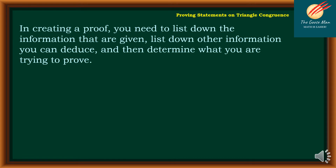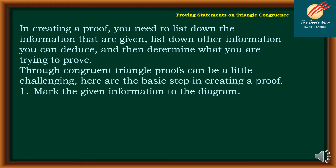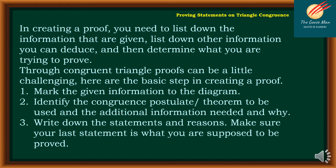In creating a proof, you need to list down the information that are given, list down other information you can deduce, and then determine what you're trying to prove. Though congruent triangle proofs can be a little bit challenging, here are the basic steps: number one, mark the given information to the diagram; number two, identify the congruent postulates to be used and the additional information needed; and finally, write down the statements and reasons. Make sure your last statement is what you are supposed to prove.